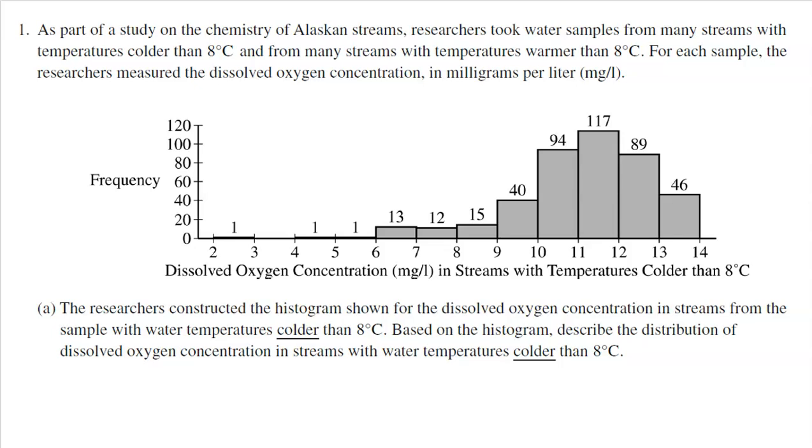This is a histogram of the streams that were colder than 8 degrees. The researchers constructed the histogram shown for the dissolved oxygen concentration in streams from the sample with water temperatures colder than 8 degrees. Based on the histogram, describe the distribution of dissolved oxygen concentrations in streams with water temperatures colder than 8 degrees.